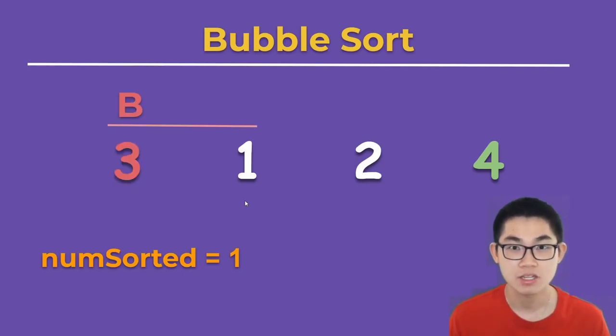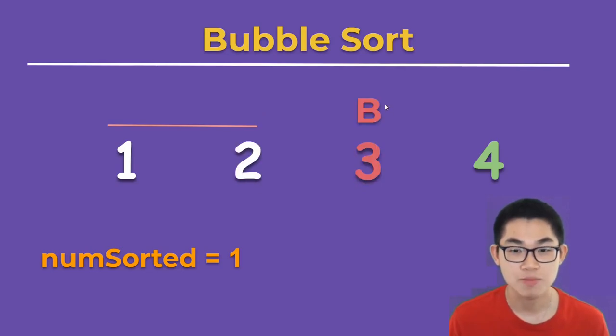We put b on the first element of the array, so b is 3. 3 is larger than 1, so we swap them. 3 is larger than 2, so we swap them. Now b is outside of the line and we can see that 3 is in its correct place. So we increment numSorted to 2.